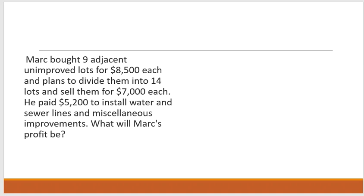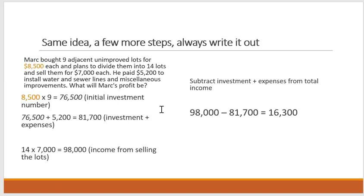Anyone making these types of investments is going to know what their potential profit will be. It's the same idea as the first question, just a few more steps. For these wordy problems, always write it out and it looks a lot more straightforward. $8,500 — the cost of the unimproved lots — times nine equals $76,500. That's the initial investment. Then add what he paid for water and sewer lines and miscellaneous improvements: $5,200. So $76,500 plus $5,200 equals $81,700 — that's our investment plus expenses.